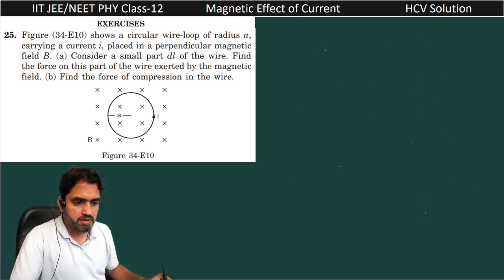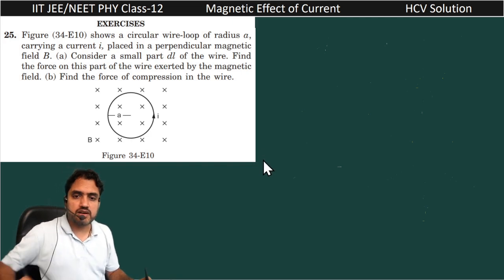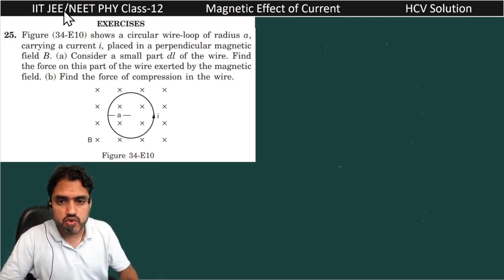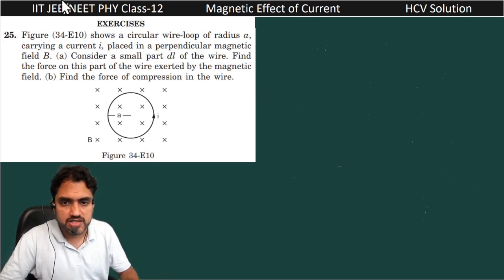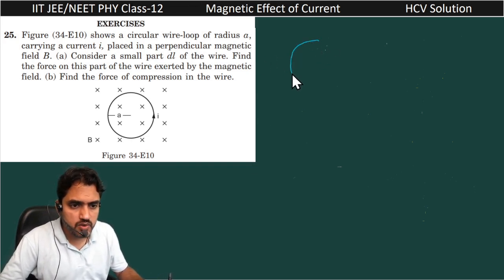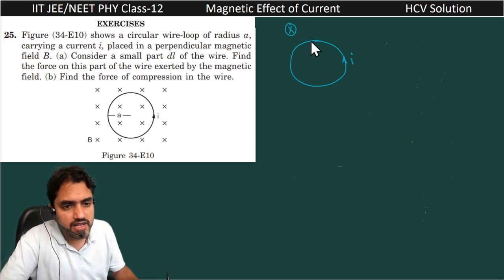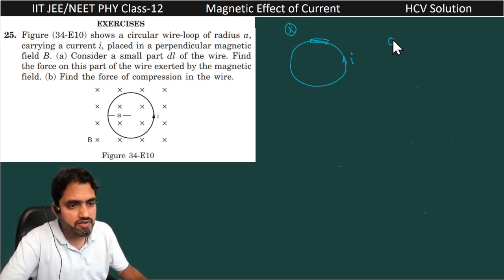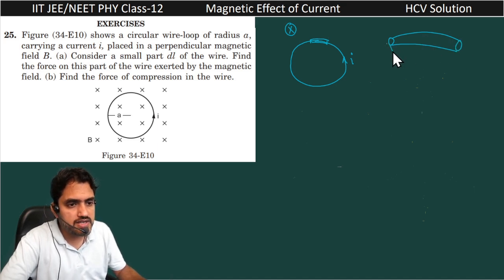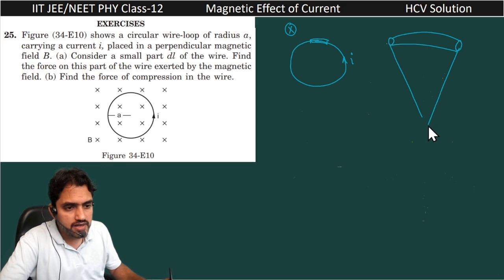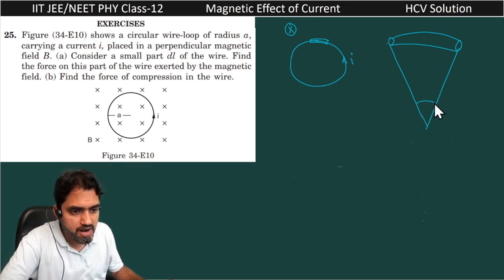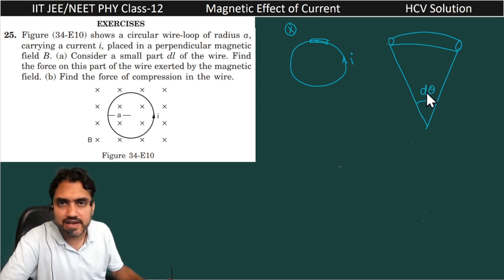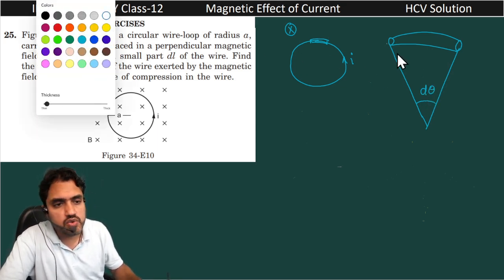Now for part b, we need to find the force of compression in the wire. This is our circular wire loop with current i flowing, placed in magnetic field b as given in the question. We take one differential part as we already did in part one. This differential part subtends an angle dθ at the center.